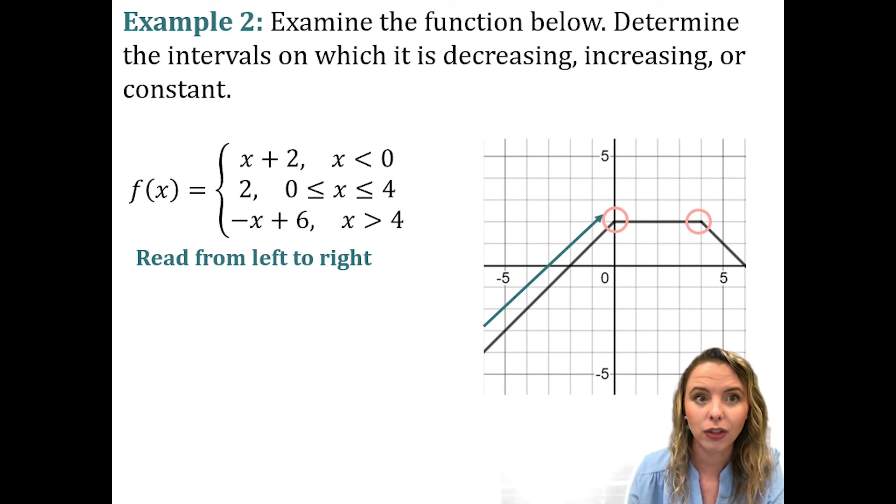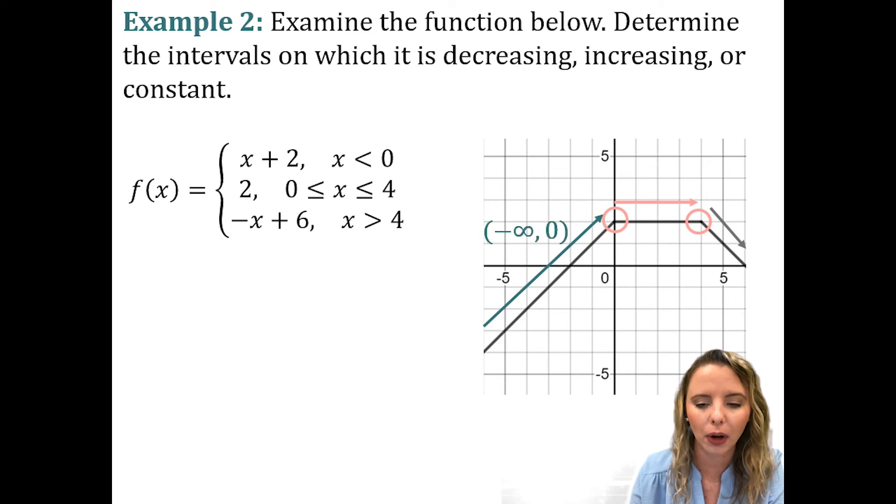And then, we're reading from left to right again and we have a flat section and then we have a downward section. So, we're going from negative infinity to zero and it's going up. So, you know it's increasing. Now, from zero to four, that's a flat section. So, it's not increasing and it's not decreasing. So, what must it be? That's right. It must be constant. It must be a constant interval.